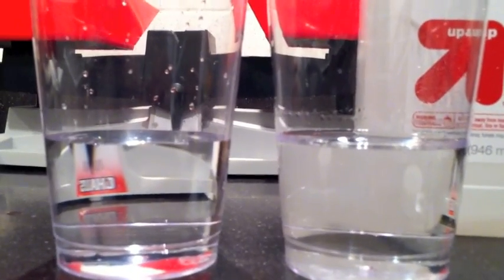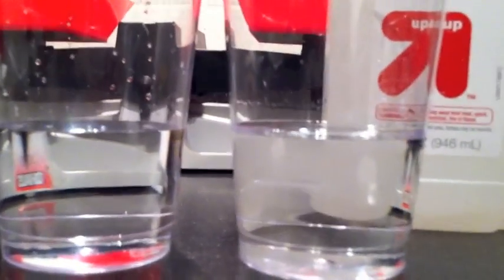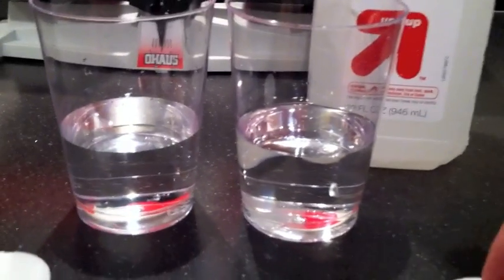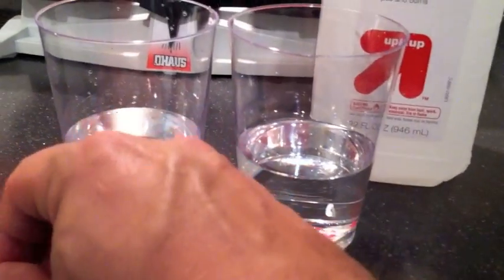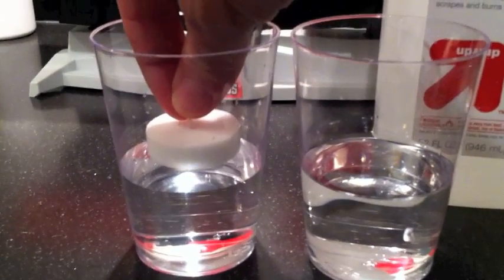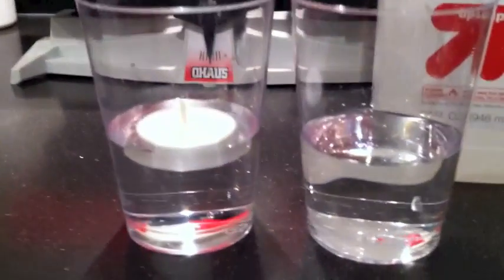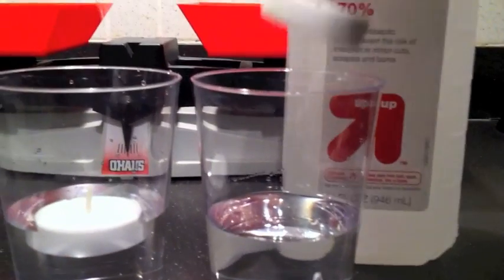And you can see that they are evenly filled. Now what we're going to do is place our tea light in the water and we know already that this floats.